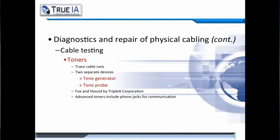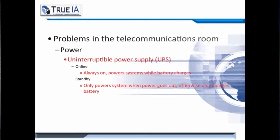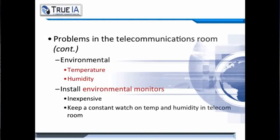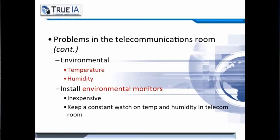Another tool used for cable testing is toners. They trace cable runs throughout the building and require two separate devices: a tone generator and a tone probe. Fox and Hound makes an outstanding toner, and you can get toners that also include phone jacks for communications. Next, you should look at your power supplies — do you have a UPS? If you do, is it online? Check the standby power. Also consider environmental issues like temperature fluctuations or humidity. It's always a good idea to install environmental monitors — they're fairly inexpensive and keep a constant watch on the temperature and humidity in your telecommunications room.